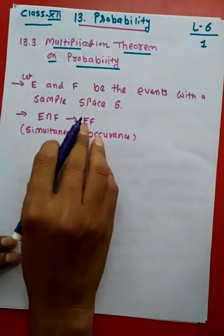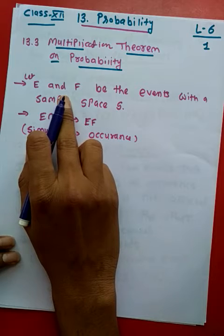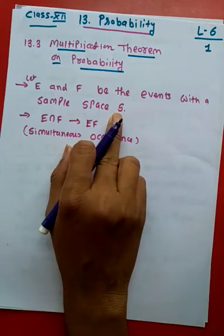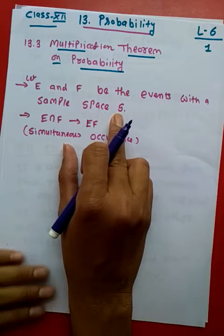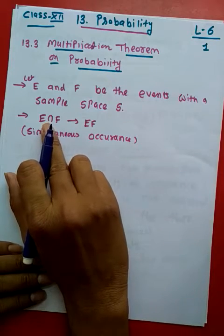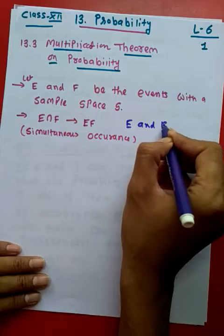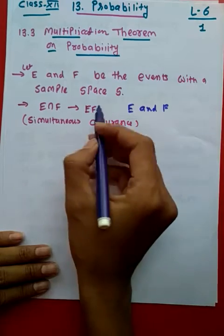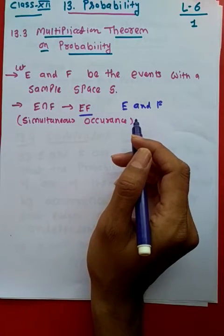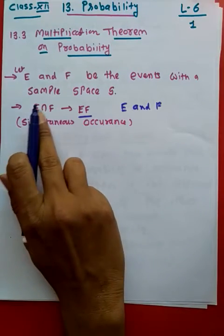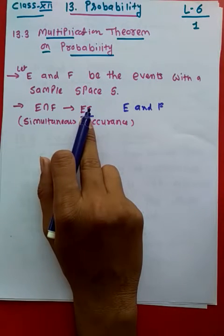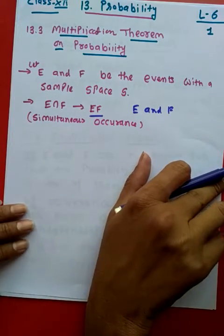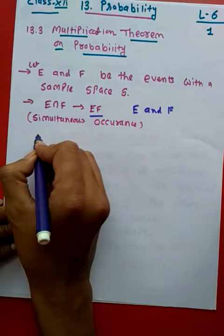Let us say we have two events, event E and event F, and they both are happening in the same sample space. As we know, E intersection F means that E and F both are occurring simultaneously. So we can say simultaneous occurrence, and the symbol, another notation for it is EF. We are going to derive one equation, very small derivation. So let us start.